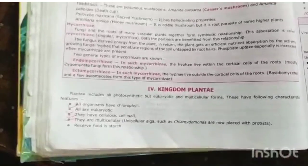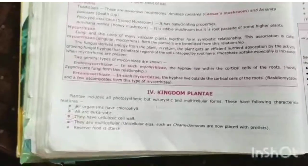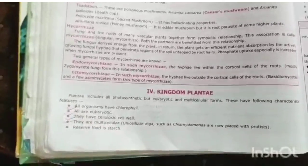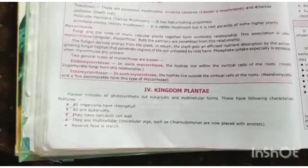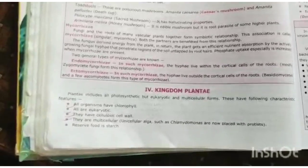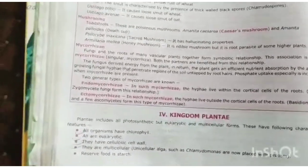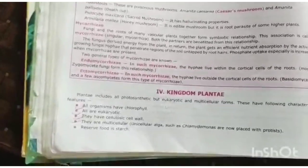They are multicellular — 'multi' means more than one, so they have multiple cells of complex structure. However, unicellular algae such as Chlamydomonas are now placed with Protists, not Plantae. So all organisms belonging to Plantae are multicellular.